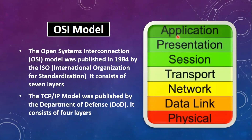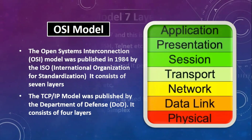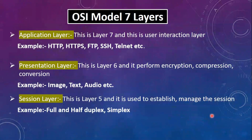There are 7 layers: Application layer, Presentation layer, Session layer, Transport layer, Network layer, Data link layer, Physical layer. We will see each layer one by one, just a brief overview. In case you want detailed information, we have that on our channel — see the link in the description.